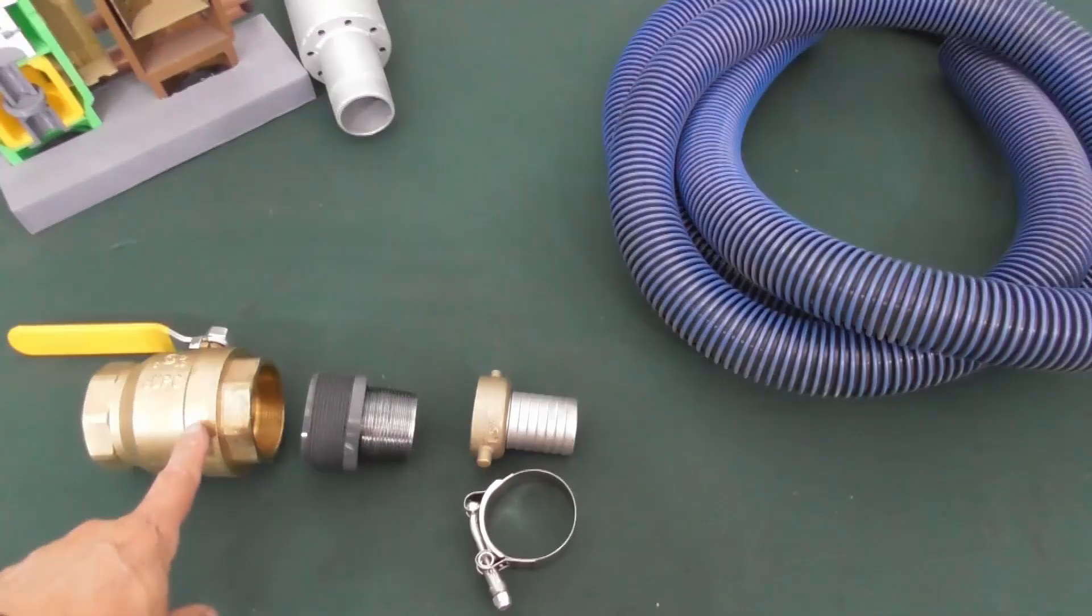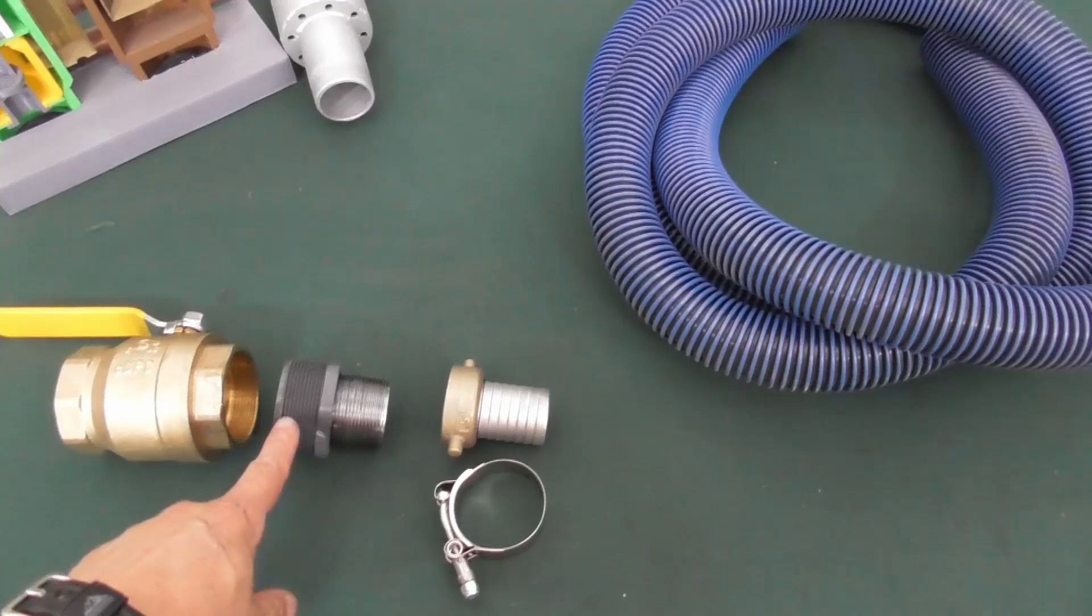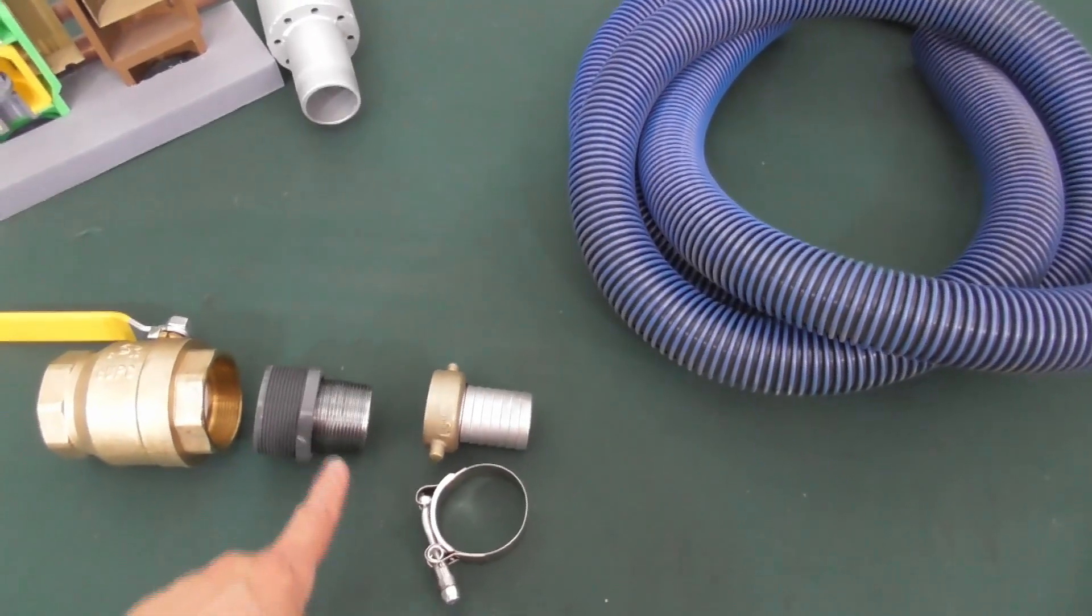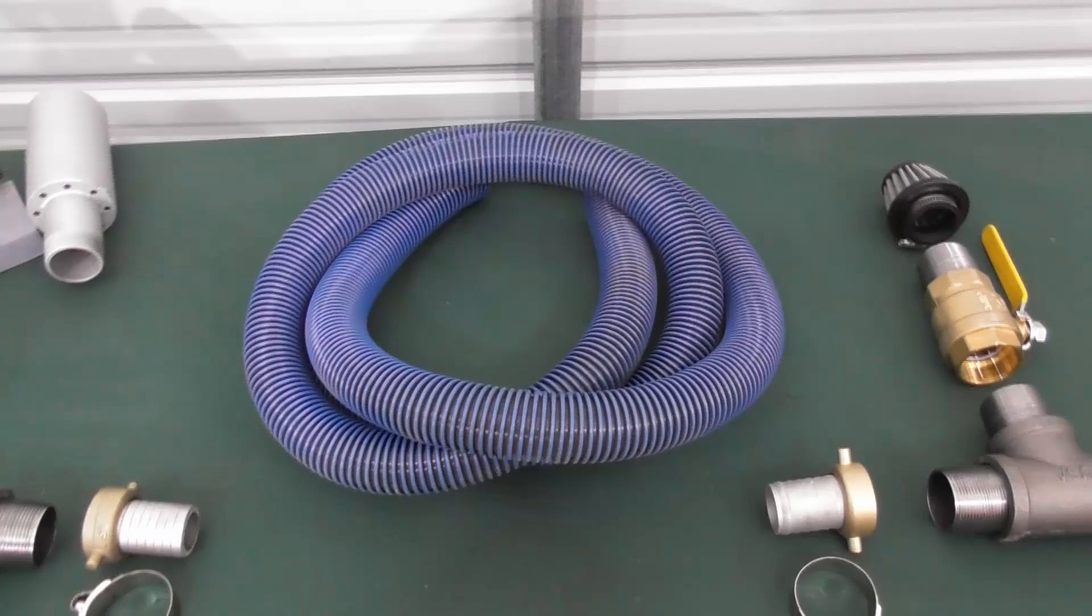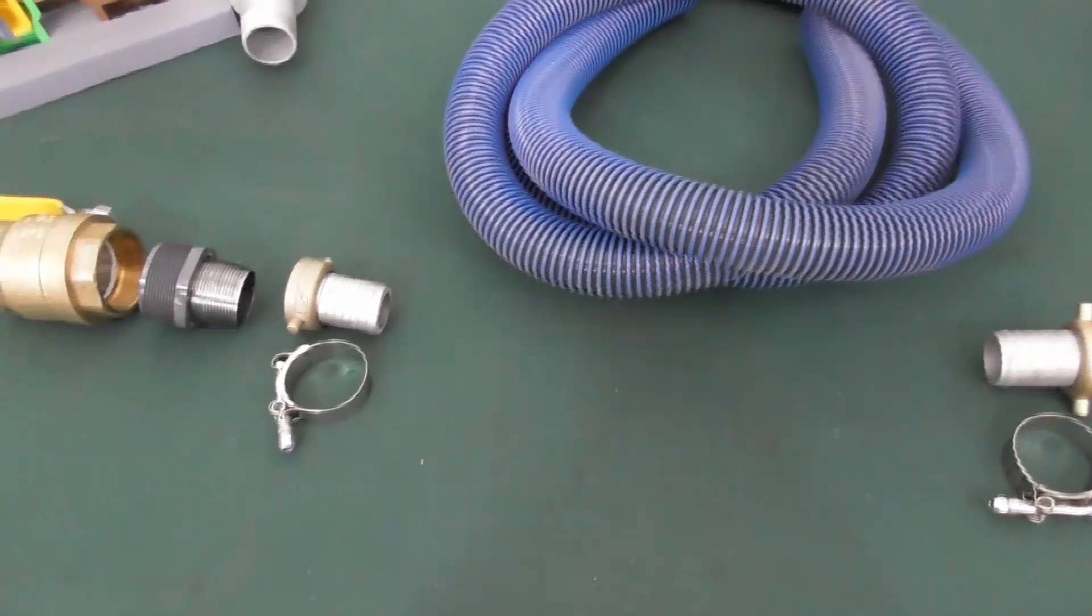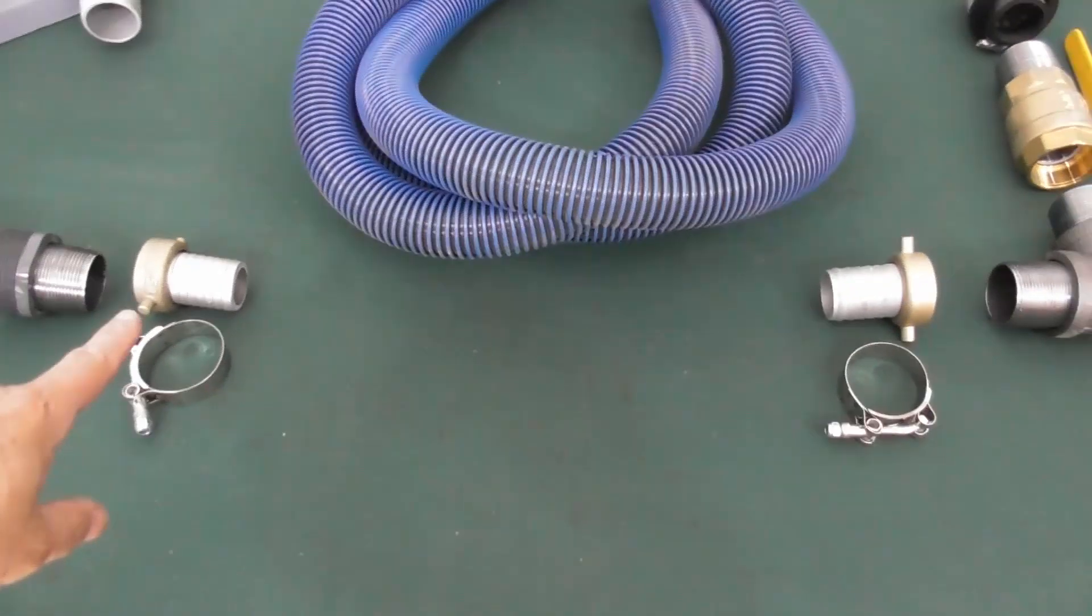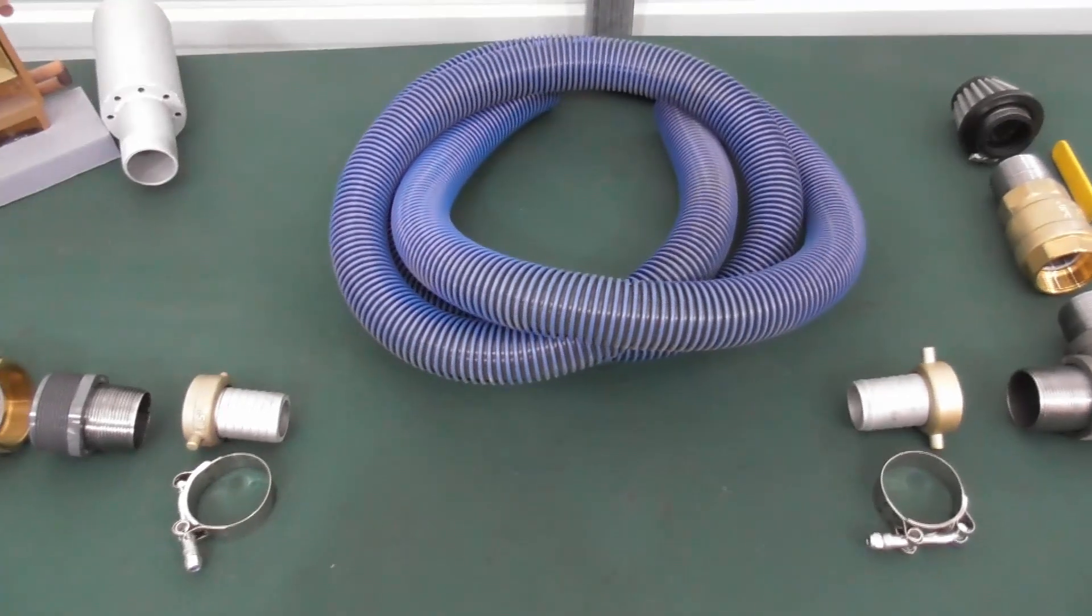Adding to the two inch ball valve we put in a reducer that goes down to one and a half inch. Then we have our ten foot of flexible hose, the one and a half inch. We've got two quick connects and hose clamps to go on each end of the hose.